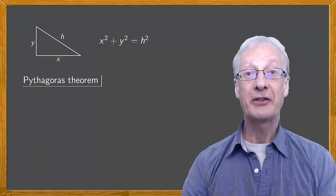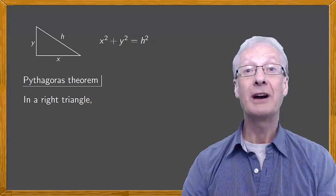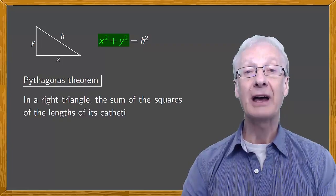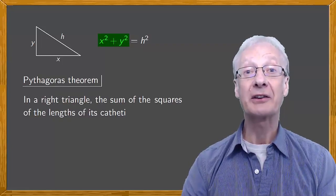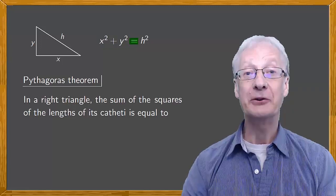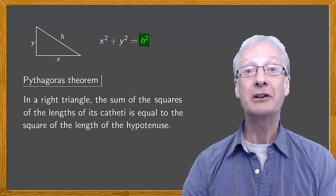The Pythagoras theorem states that in a right triangle, the sum of the squares of the lengths of the catheti is equal to the square of the length of the hypotenuse.